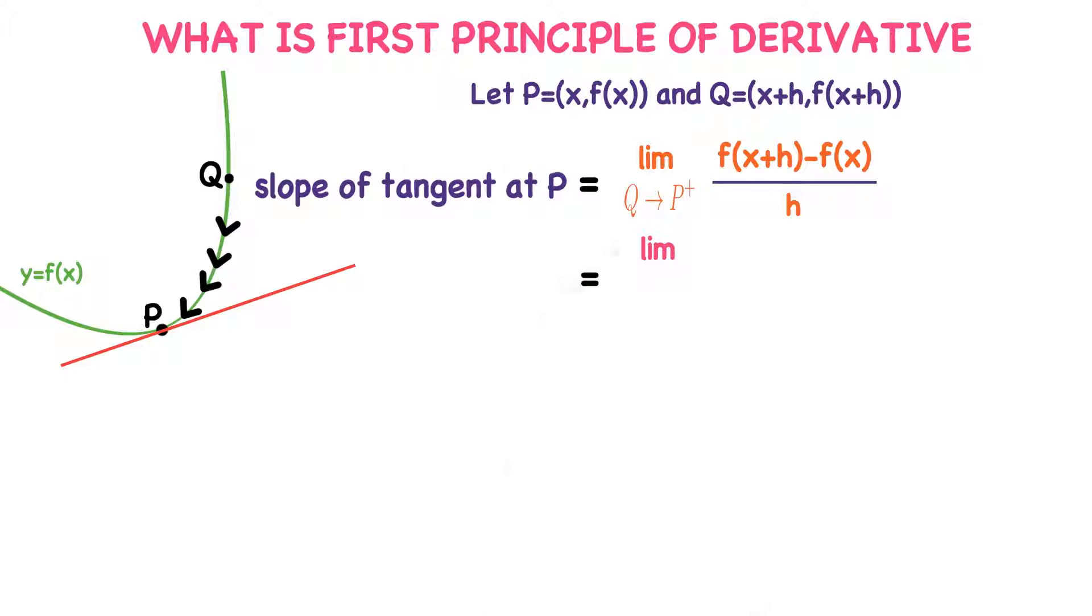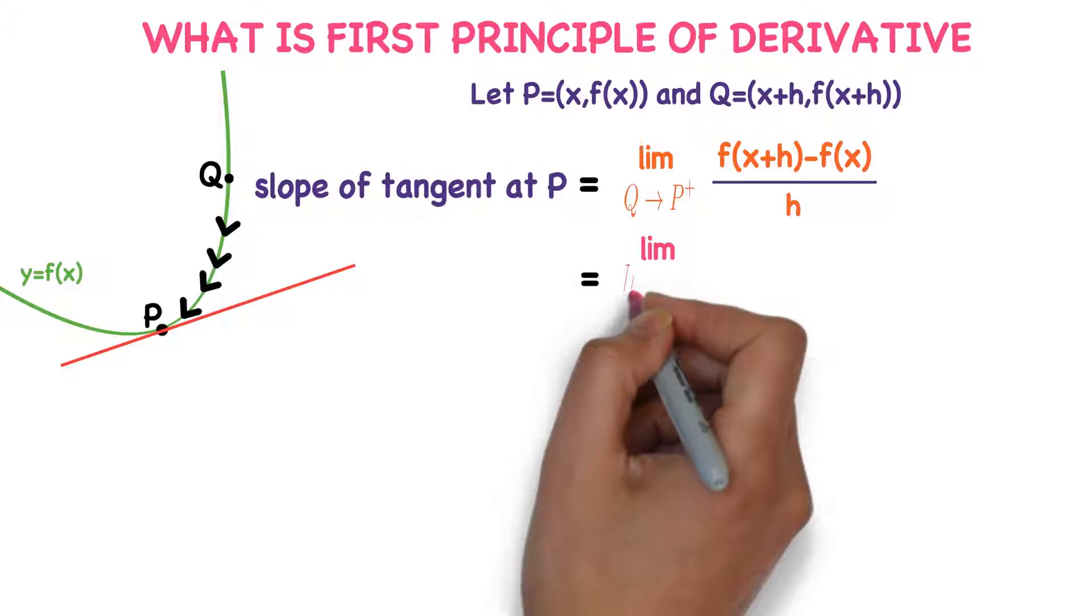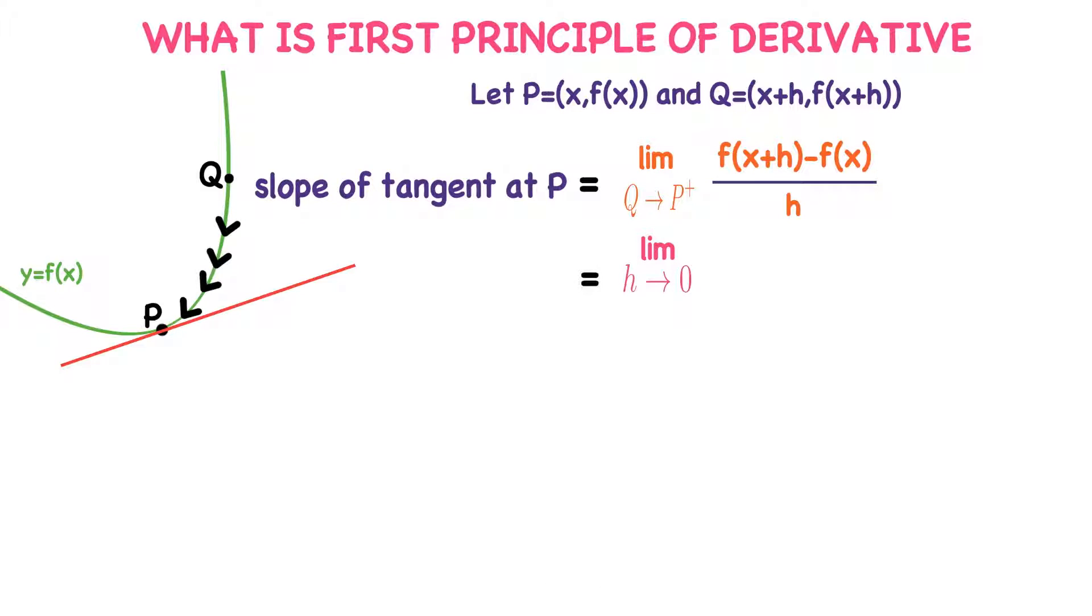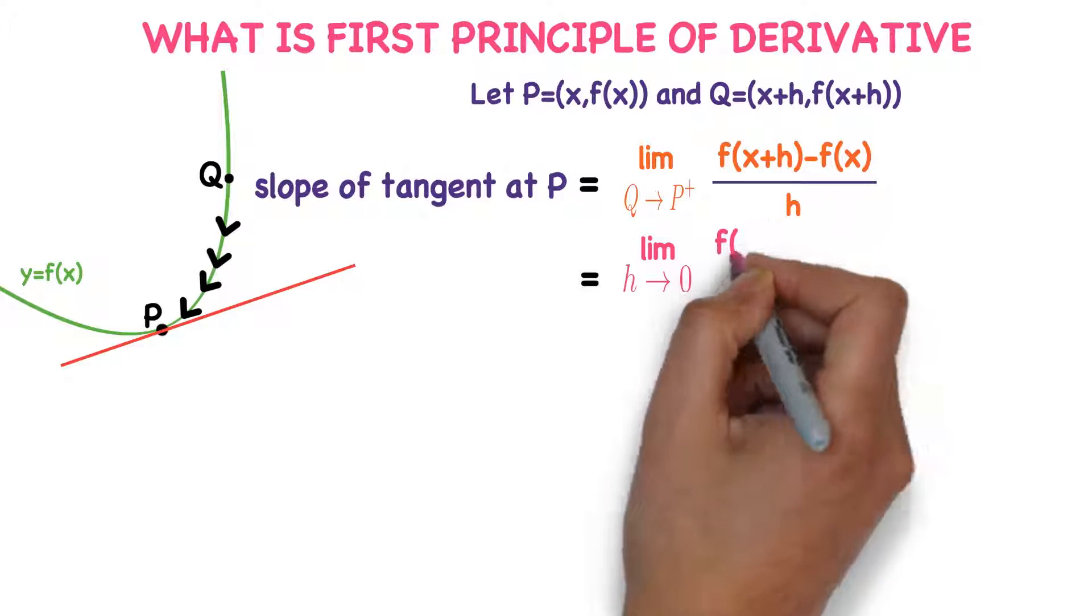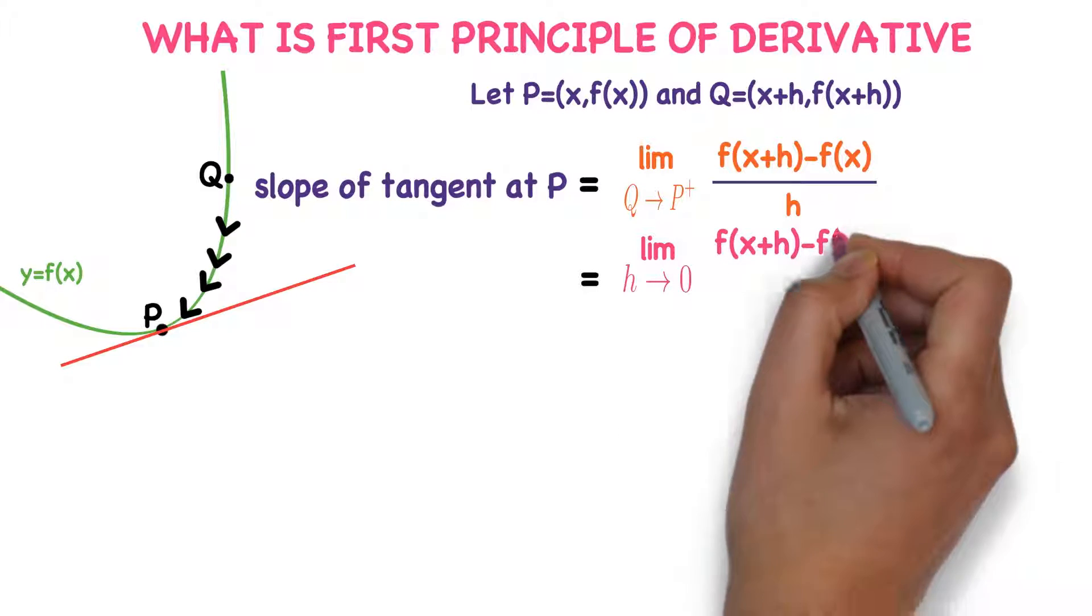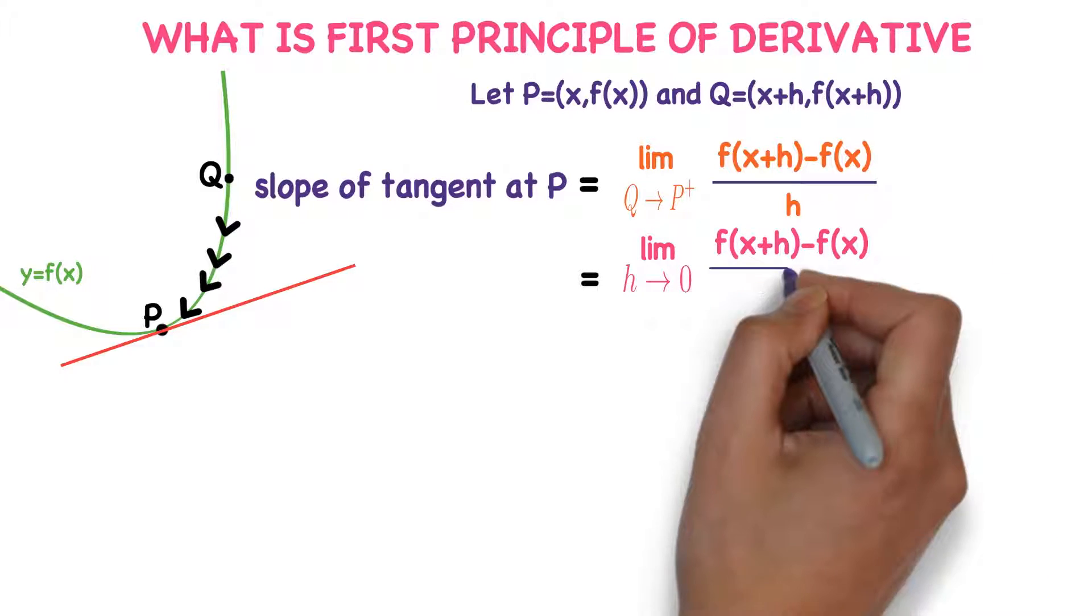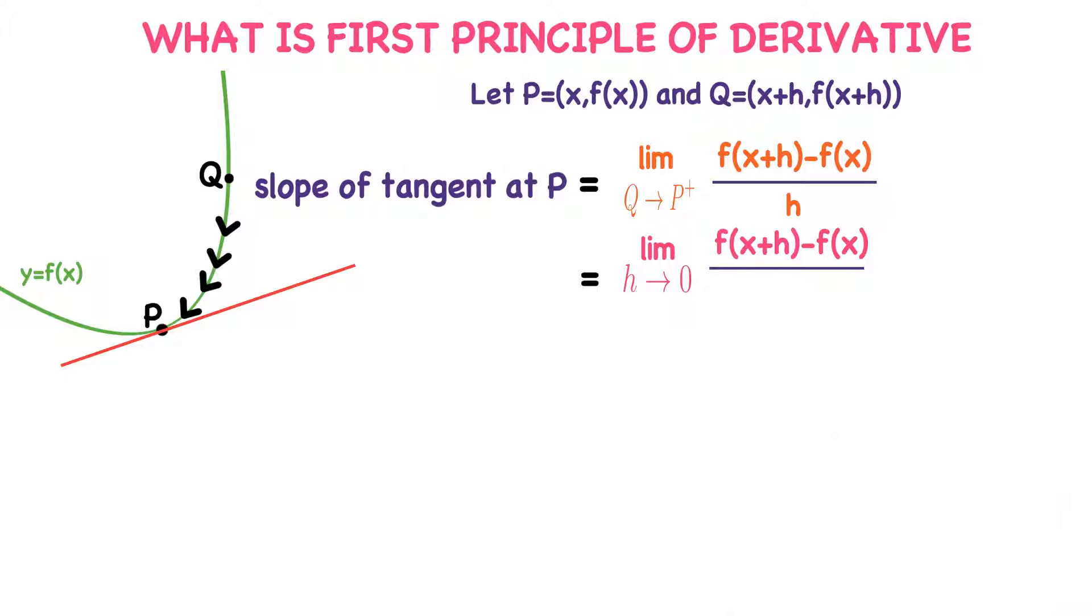Limit Q tends to P plus means h approaches zero. We already discussed this in the previous class. Limit h tends to zero [f(x+h) - f(x)] divided by h. What is this expression?